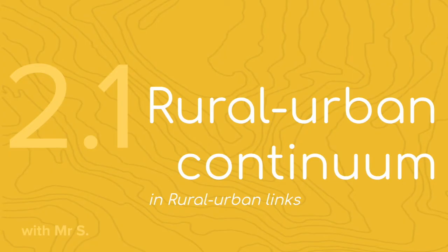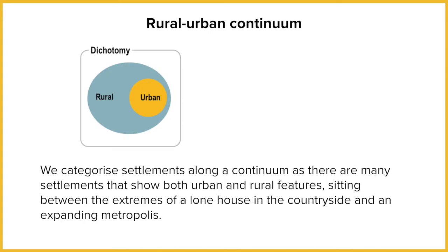Let's have a look at what we mean in terms of the continuum. It's very easy to think of rural and urban as being two completely opposing factors, as pictured here in this diagram. So you're either in an urban area — this orange circle represents being in a city — and as soon as you step over this line, you're in the countryside, in the rural. In reality, it doesn't work like that. This one-or-the-other view is called a dichotomy.